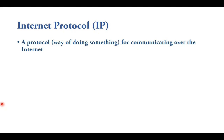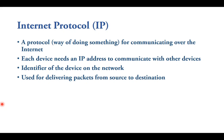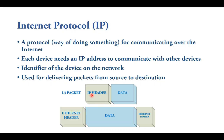The internet protocol, or IP, is a protocol for communicating over the internet. The word protocol means a way or a method — an official method of doing something. Each device needs an IP address to communicate with other devices over the internet. This IP is an identifier of the device on the network, so no two devices can have the same IP on the same network. IP is used for delivering packets from the source to the destination. As you can see in the Layer 3 packet, we have an IP header, and inside the IP header, along with other information, we have a source IP and a destination IP.